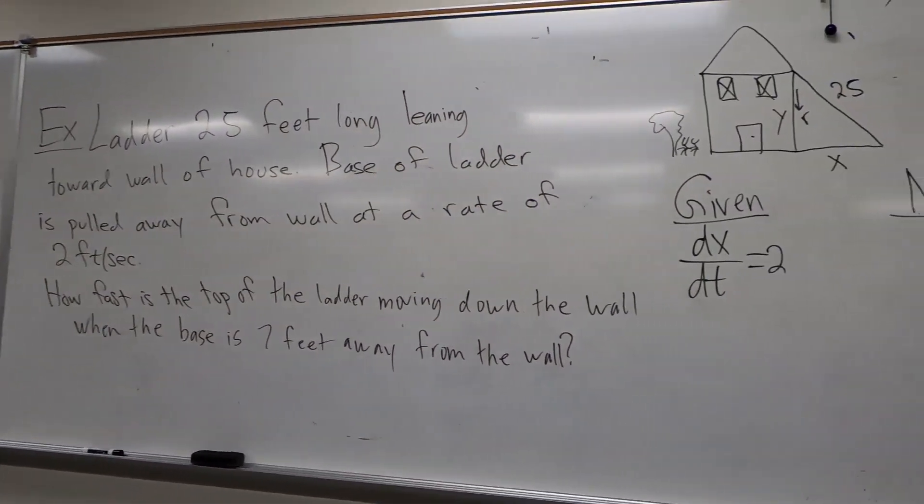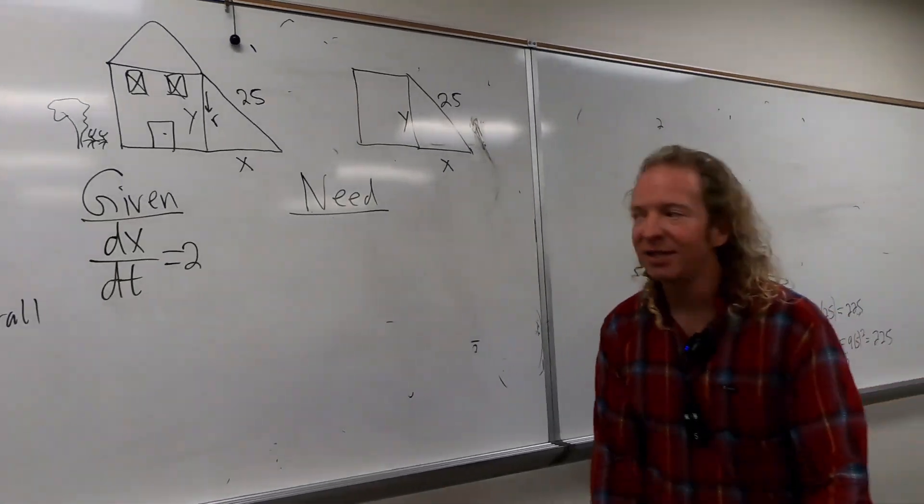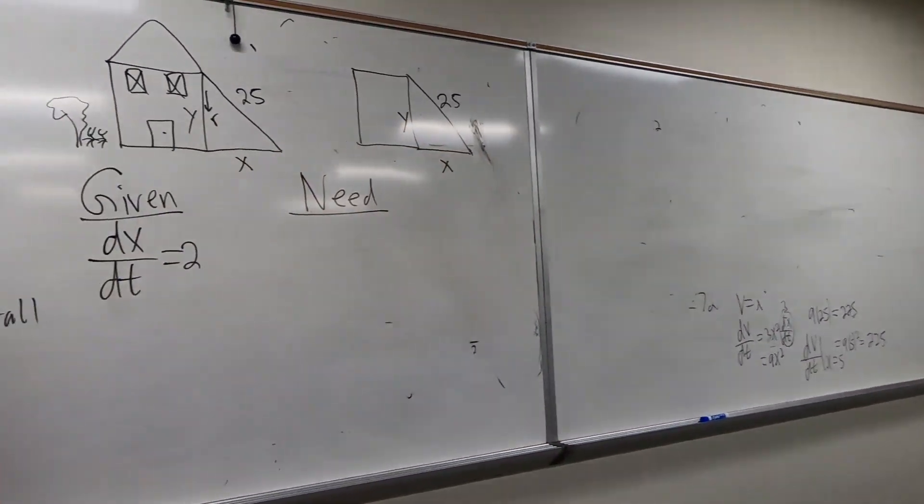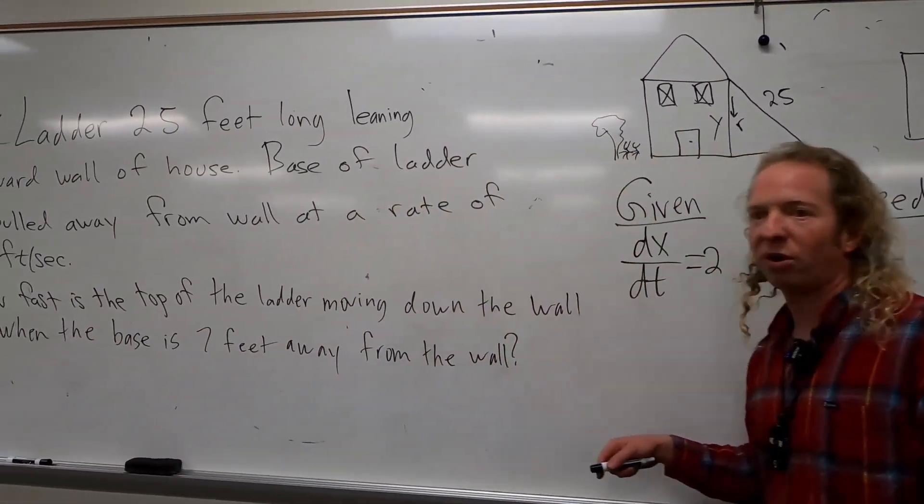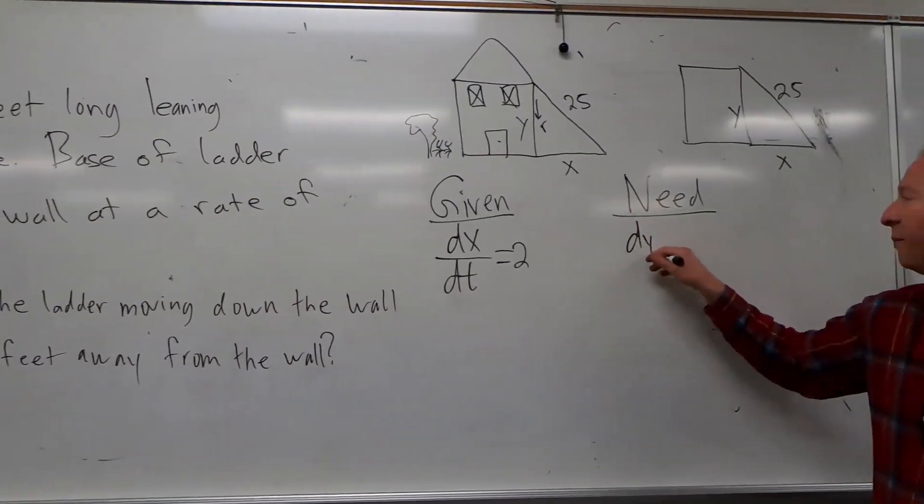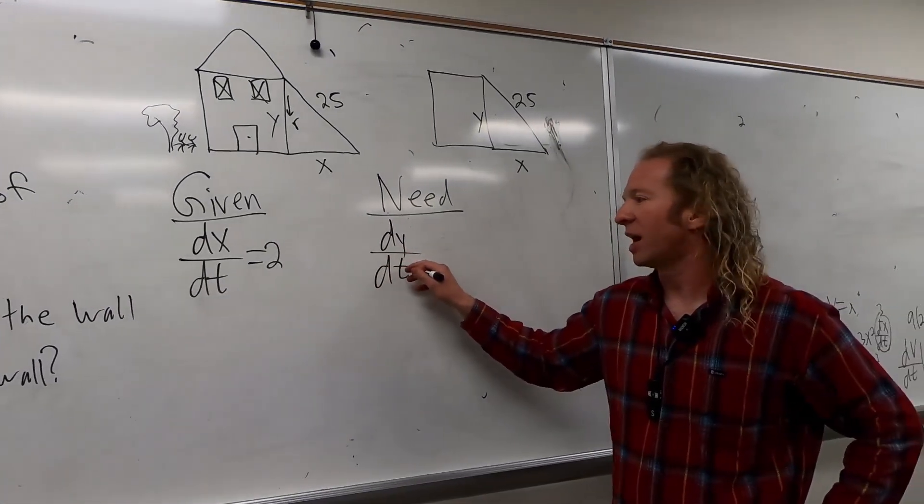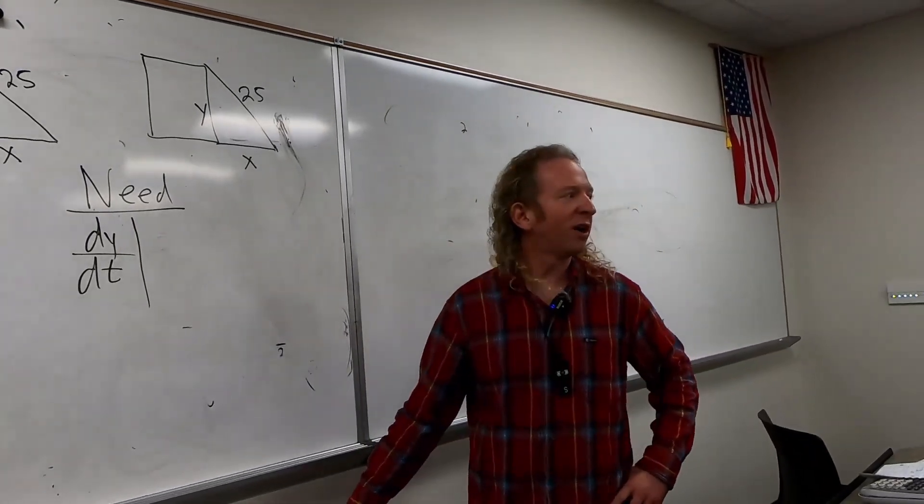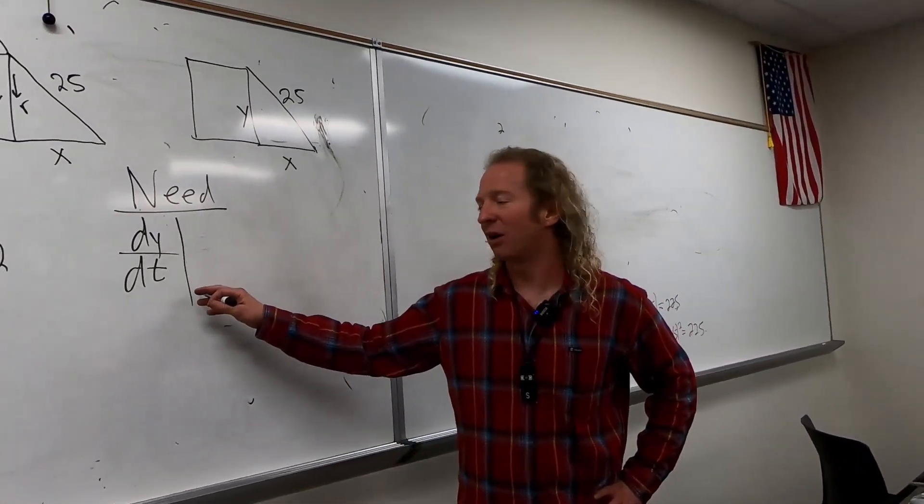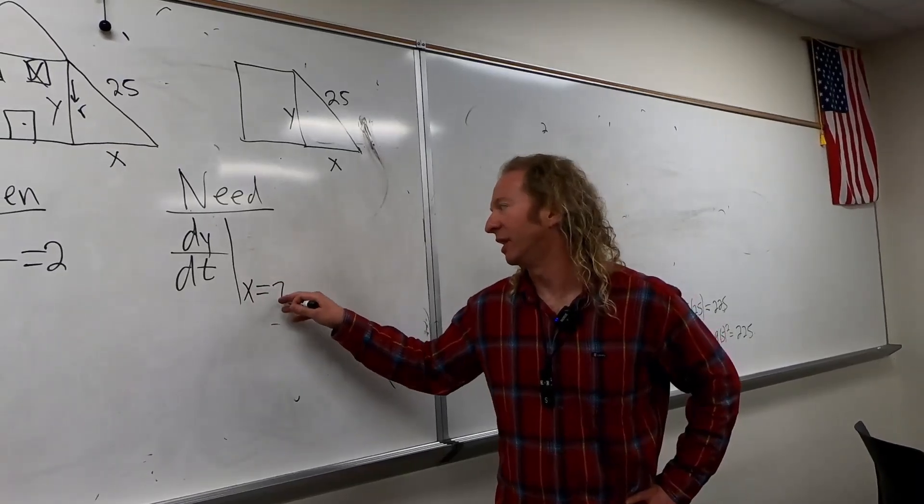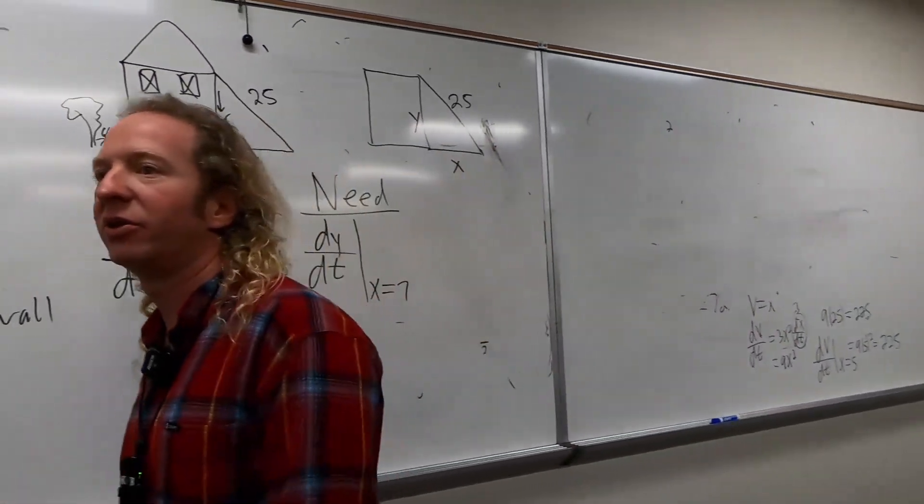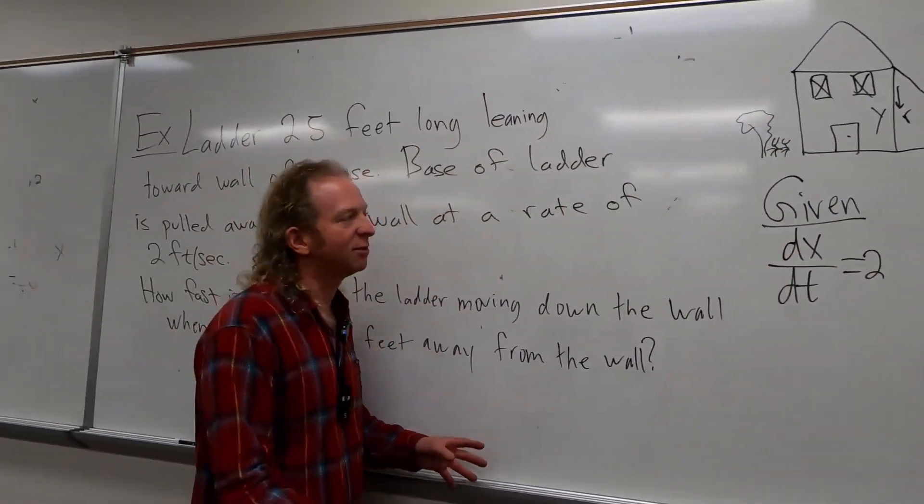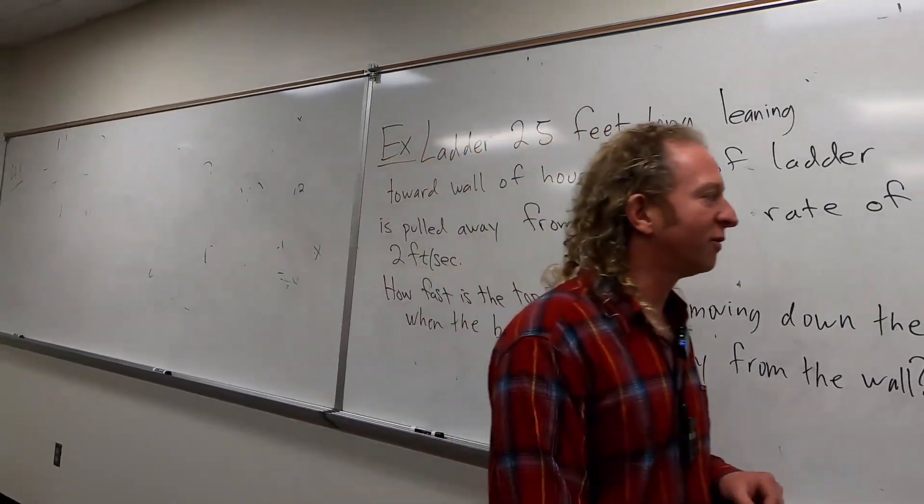And what do we need? dy/dt. Very good. Because that's how fast the top of the ladder is moving down the wall. So dy/dt. And we need that when the base is seven feet from the wall. So that would be, which variable would that be? dx or x. X equals seven. Yeah. X equals seven. Very good. That's what we need. So we're given some information. And we need some other information.